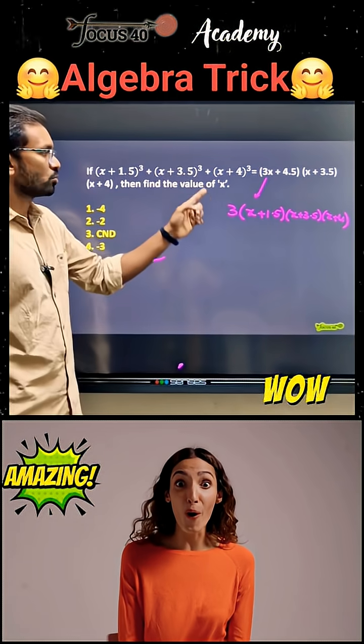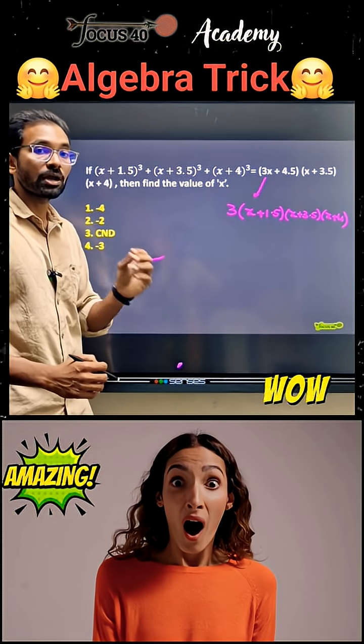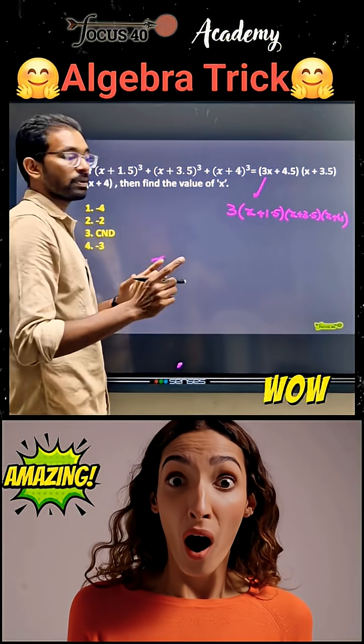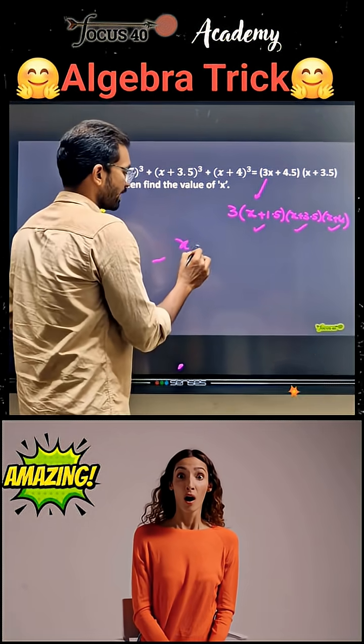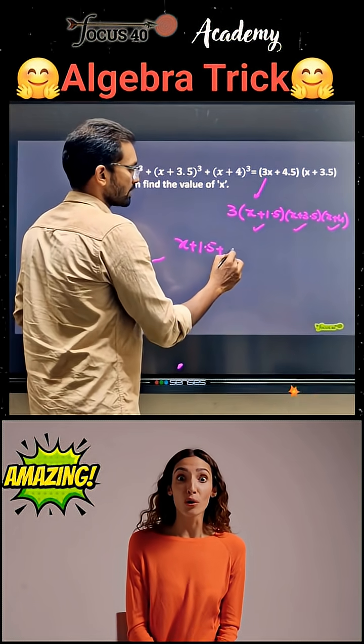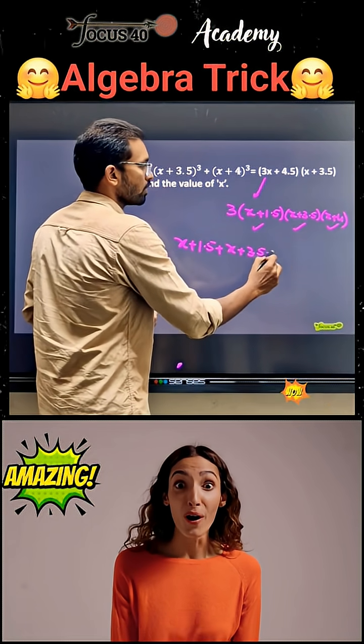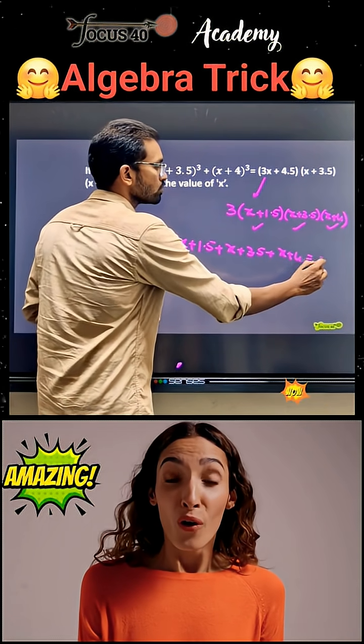a cube plus b cube plus c cube equals 3abc when a plus b plus c equals 0. So, x plus 1.5 plus x plus 3.5 plus x plus 4 equals 0.